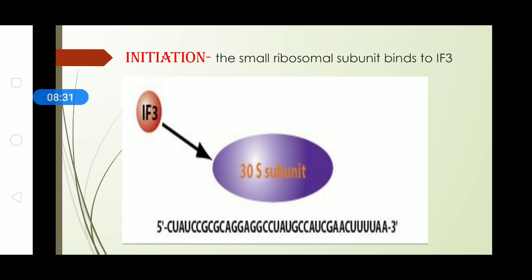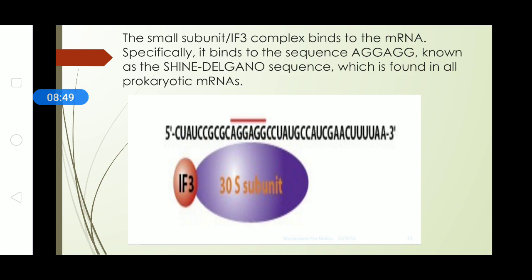So, initiation. In initiation what happens is, you can see in the diagram, the ribosome smaller part that is the 30S subunit, it attaches with IF3 that is initiation factor 3 comes and binds with the 30S subunit. In the next step what happens, the 30S subunit along with the initiation factor 3 complex now comes and binds with the mRNA that is the messenger RNA. You can see in the given sequence above, there is a site AGGAGG where the subunit comes and binds.